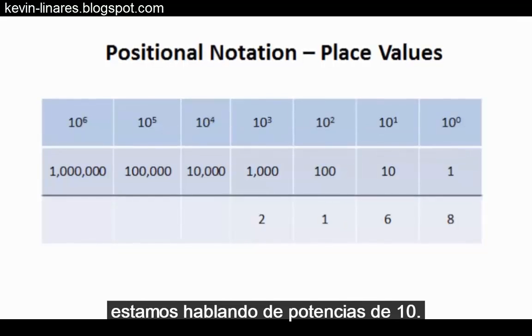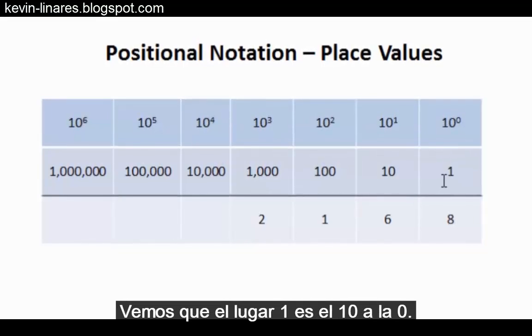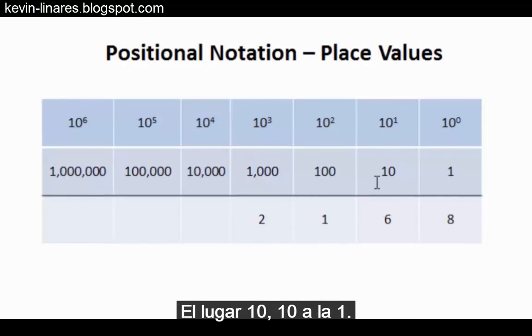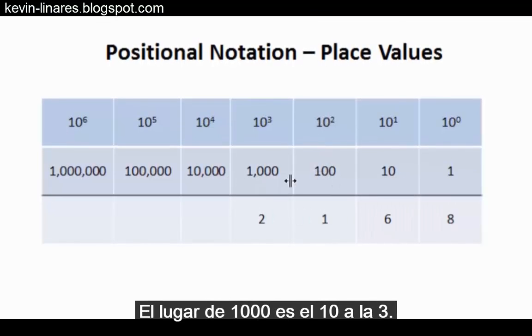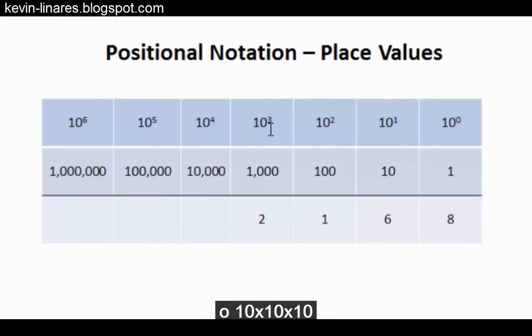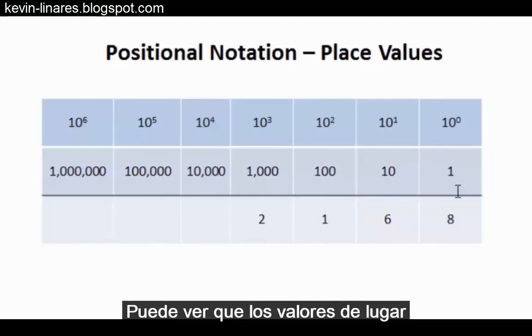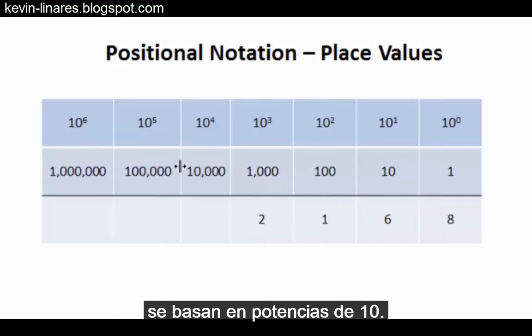Now when we're talking about the place values in the decimal number system, we're talking about the powers of 10. You can see that the ones place is 10 to the 0, the tens place 10 to the 1, the hundreds place 10 to the 2, or 10 times 10 which is 100, the thousands place is 10 to the 3, or 10 times 10 times 10, and so on and so forth.